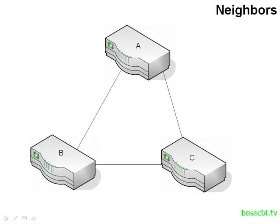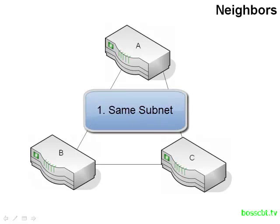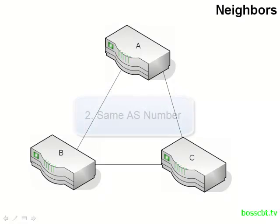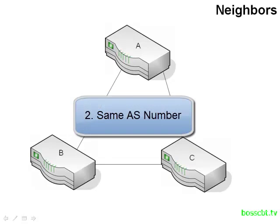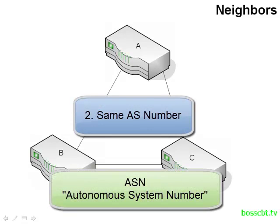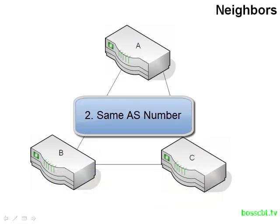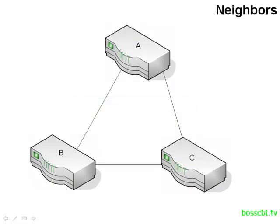Once another router running EIGRP is discovered, there are three requirements that have to be met before they can become actual EIGRP neighbors. The first is that the two routers have to be in the same IP subnet. The second is they have to have the same AS number configured. AS number stands for Autonomous System Number, and it identifies a group of routers running EIGRP.